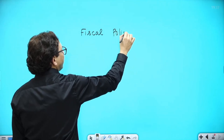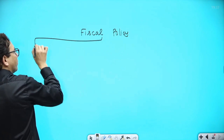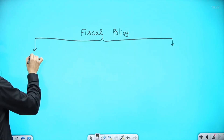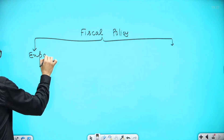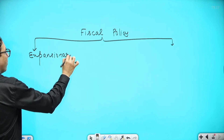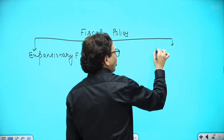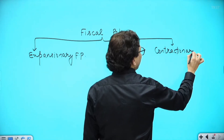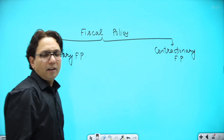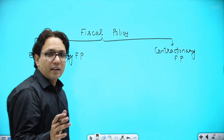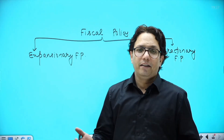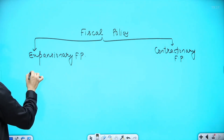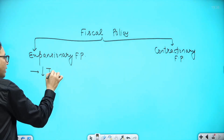Fiscal policy is of two types. Those two types are expansionary fiscal policy and contractionary fiscal policy. When I say expansionary fiscal policy, we can guess it from the name — expand. So what does the government do when it follows expansionary fiscal policy?